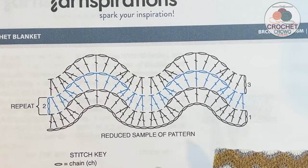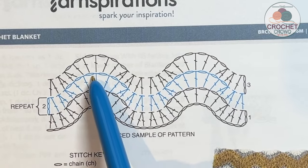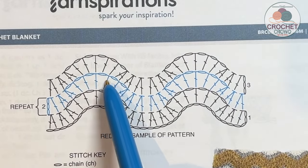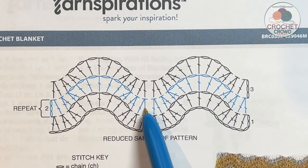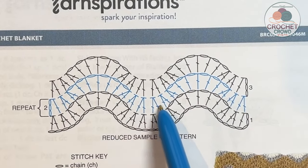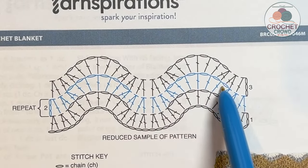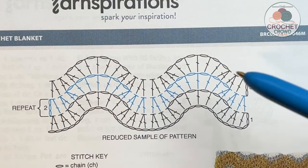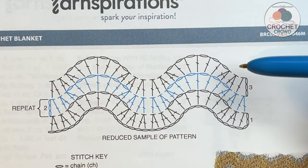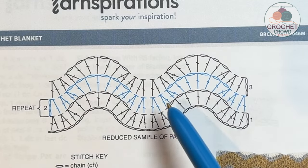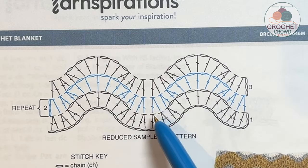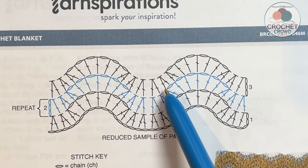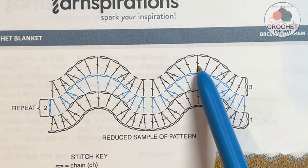When we look at one row, these are all double crochets with a chain one space, and we look at it going up and down — everything is looking pretty much in sequence. But what happens is when we build up another row, we have to eliminate stitches out of the valleys and also increase in the peaks.